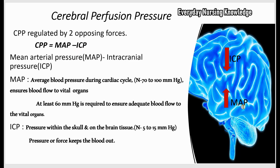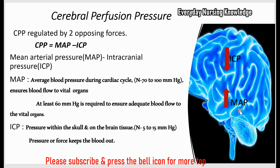MAP is mean arterial pressure. It is the average pressure during a cardiac cycle, and the normal MAP is 70 to 100 mmHg. This normal MAP ensures and maintains blood flow to all organs.